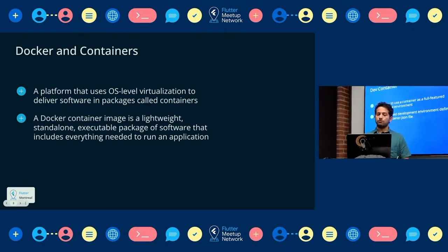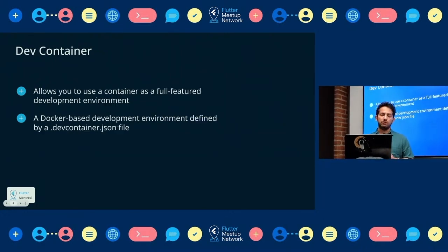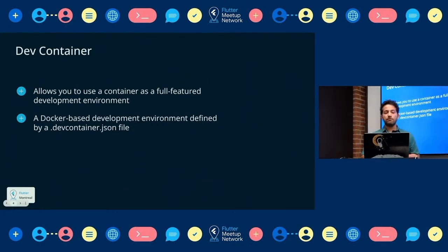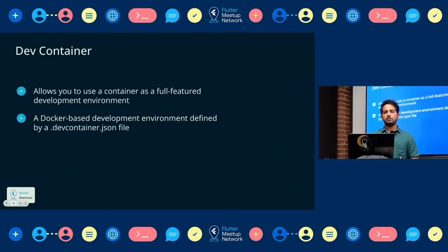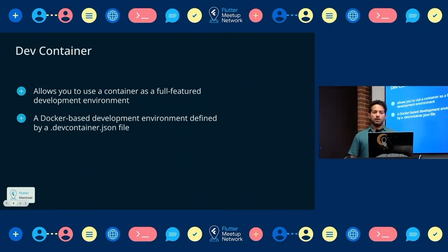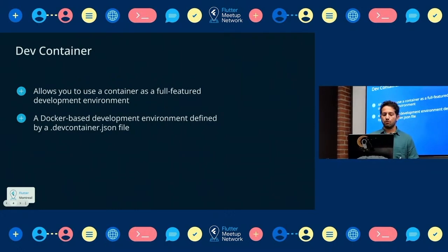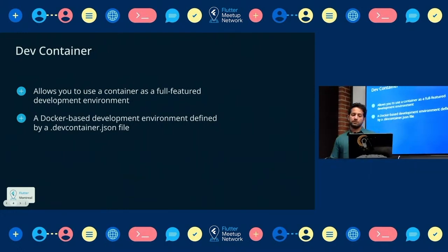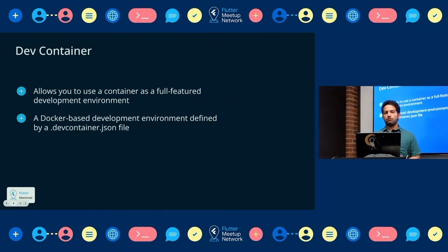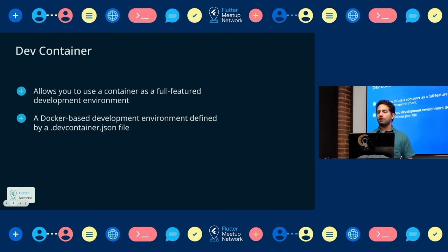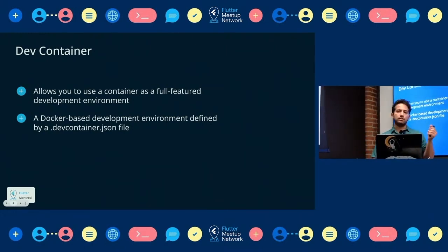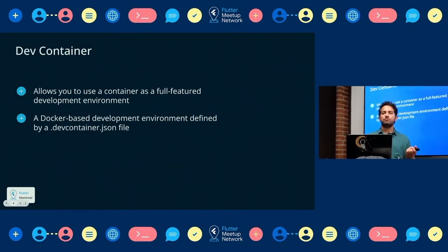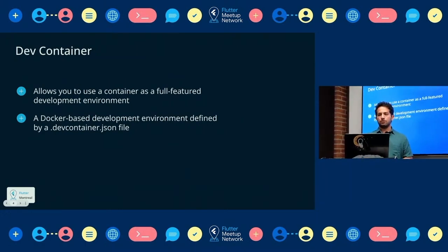Right now we're going to cover DevContainer for development. We use DevContainer for everything we need in development. Any feature or extension we use in VS Code, we put it in one JSON file called .devcontainer. You don't have to worry about anything in the environment — what packages to install, what extension is good for the project. Just use a single JSON file and you're ready to go.